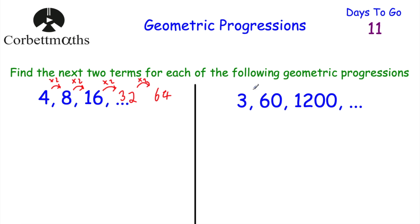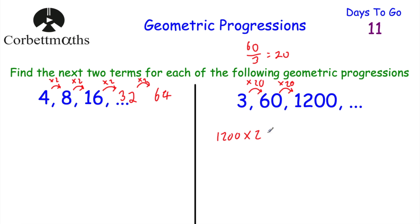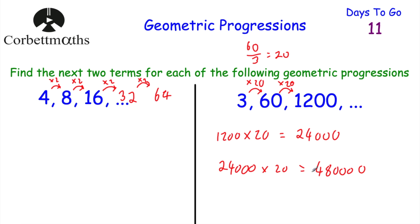Let's look at the next one: 3, 60, 1,200. To find the common ratio — the number we're multiplying by each time — we divide the second term by the first term. So 60 divided by 3 is 20, meaning we're multiplying by 20. Let's check: 3 times 20 is 60, and 60 times 20 is 1,200. The next term is 1,200 multiplied by 20, which equals 24,000. Then 24,000 multiplied by 20 is 480,000. So the next two terms are 24,000 and 480,000. Well done if you got those.